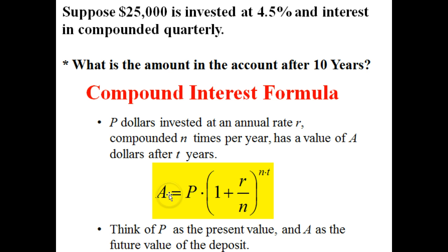So A is going to be whatever our future value is, that's going to be our answer basically for this equation. P is however much we're going to initially invest. In this case, it would be our $25,000.